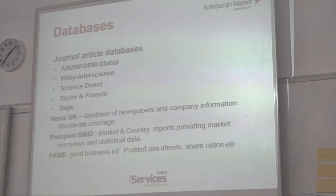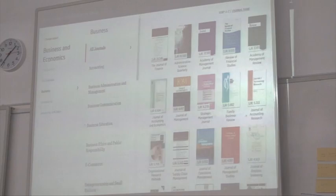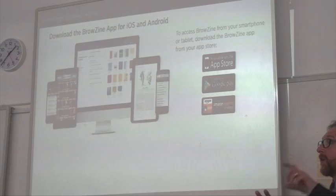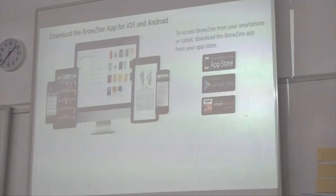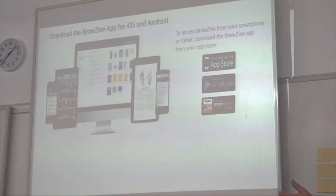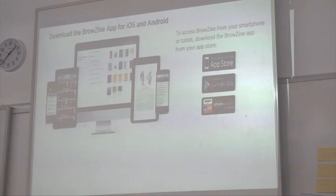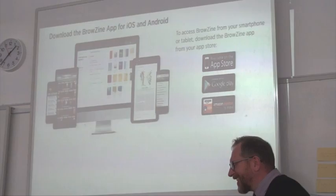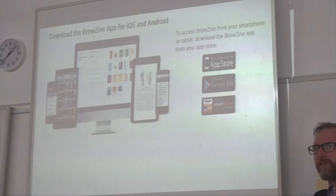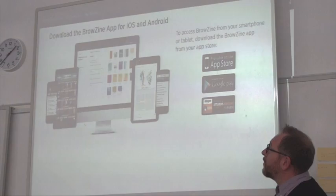This other app is called Browzine — it's a journal app that links up live research. For example, Leadership Quarterly — you could find it on Browzine and add it to your own little bookshelf. It will give you all the contents and you can open it up and read the articles on your phone or tablet. You can also follow a particular journal, and if a new edition comes out it'll ping you the table of contents so you can keep up to date.